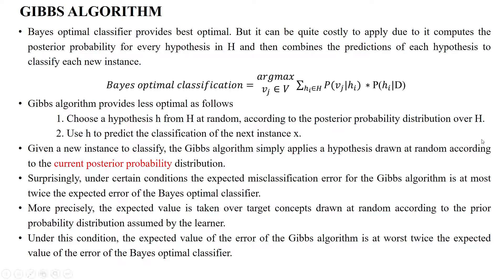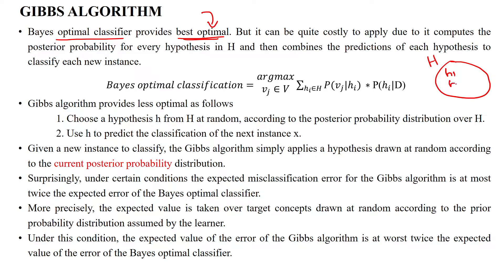The Gibbs algorithm is used to select the optimal hypothesis. In the Bayes optimal classifier, we select the optimal hypothesis by considering all the hypotheses available in the hypothesis space. Suppose if I have the hypothesis space H which has three candidate hypotheses, we will consider all three hypotheses to select the optimal solution.